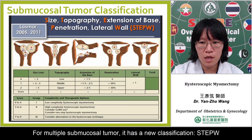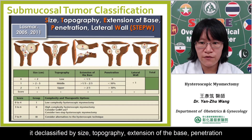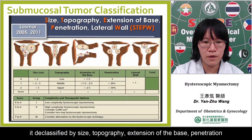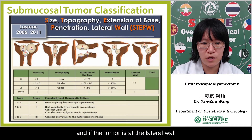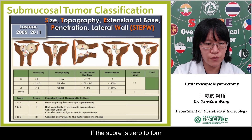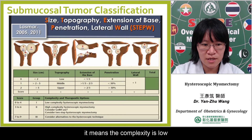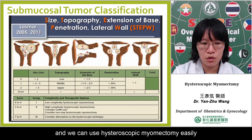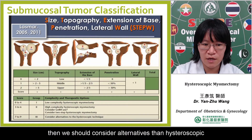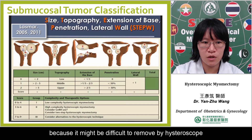For multiple submucosal tumors, there is a new classification called STEP/STAPLE. It is classified by size, topography, extension of the base, penetration, and if the tumor is at the lateral wall. If the score is 0 to 4, it means complexity is low and we can use hysteroscopic myomectomy easily. If the score is from 7 to 9, we should consider alternatives to hysteroscopy because it might be difficult to remove by hysteroscope.